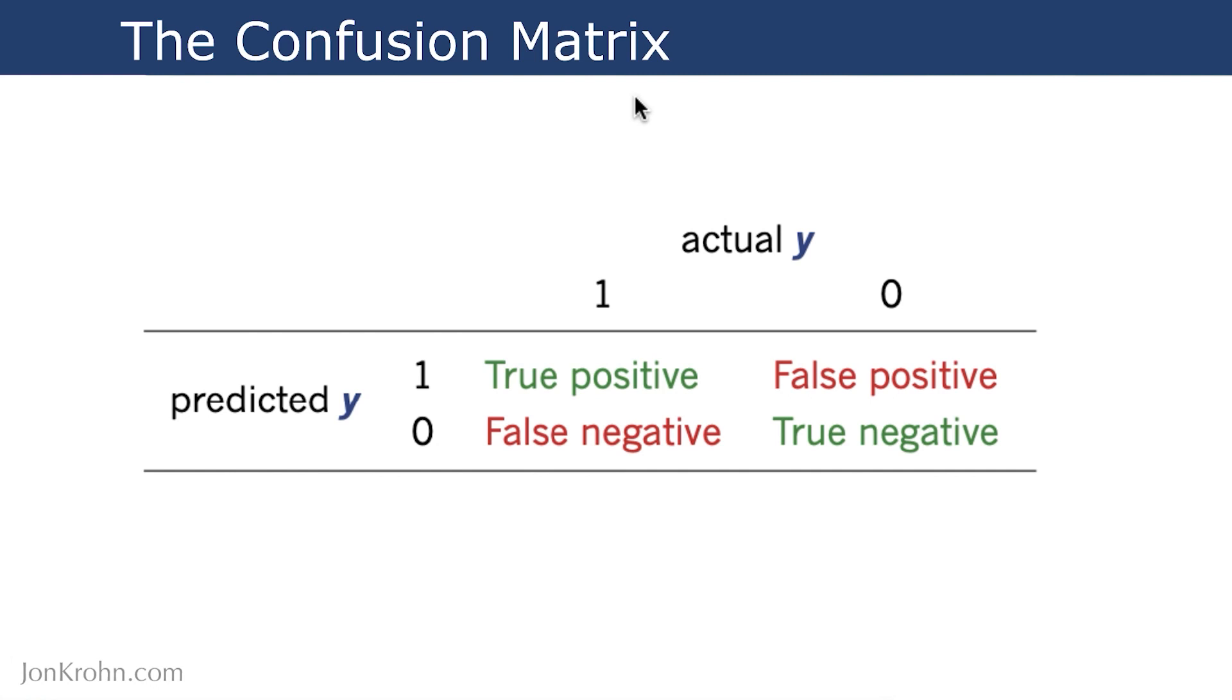It's called this because it's a matrix of when someone or an algorithm is confused. As opposed to the user of the matrix, it's more for logging when some process leads to mistakes, including when an algorithm makes mistakes - when an algorithm is confused, in other words.